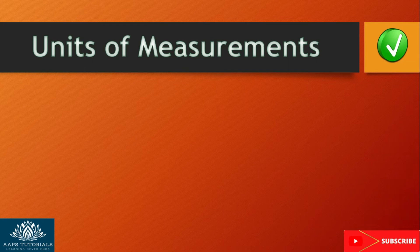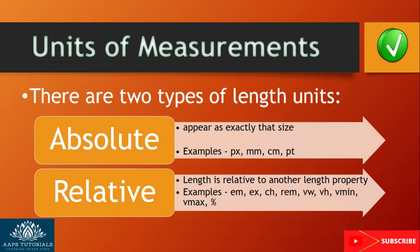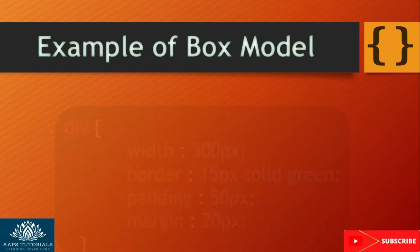Let us look at them individually. Auto: the browser calculates height or width automatically. Length: specifies the length, height, and width in pixels. There are two types — absolute and relative. Absolute length defines an exact size while relative defines a value related to another length property. Initial: sets a default value. Inherit: inherits the value from the parent element.